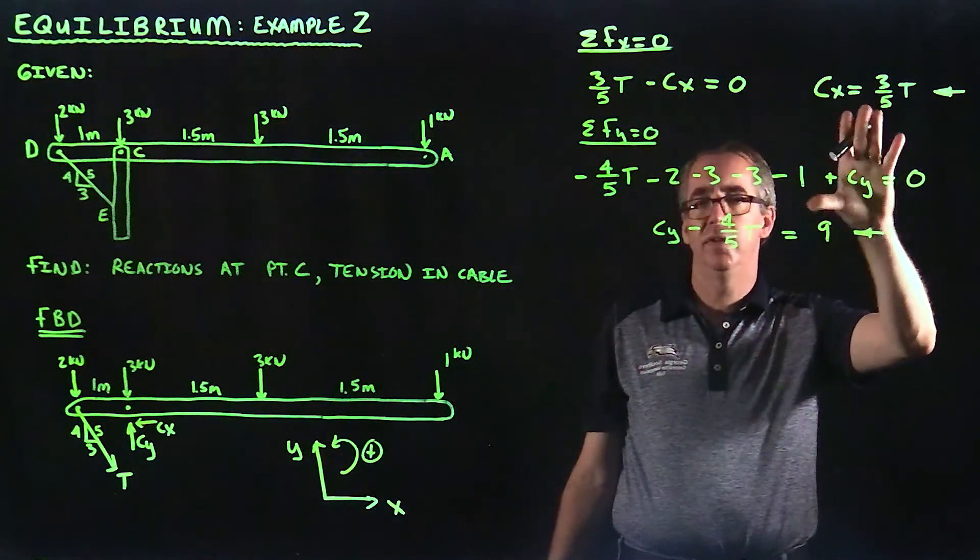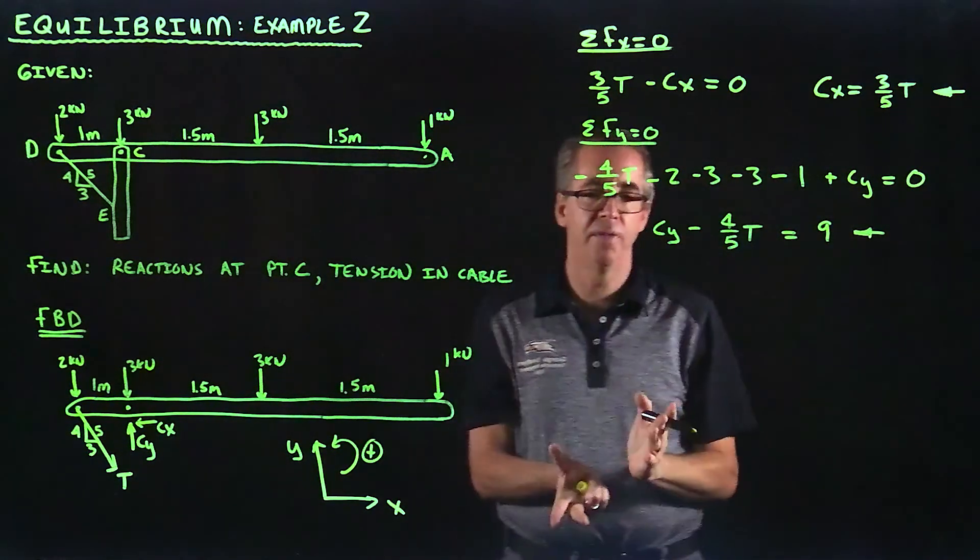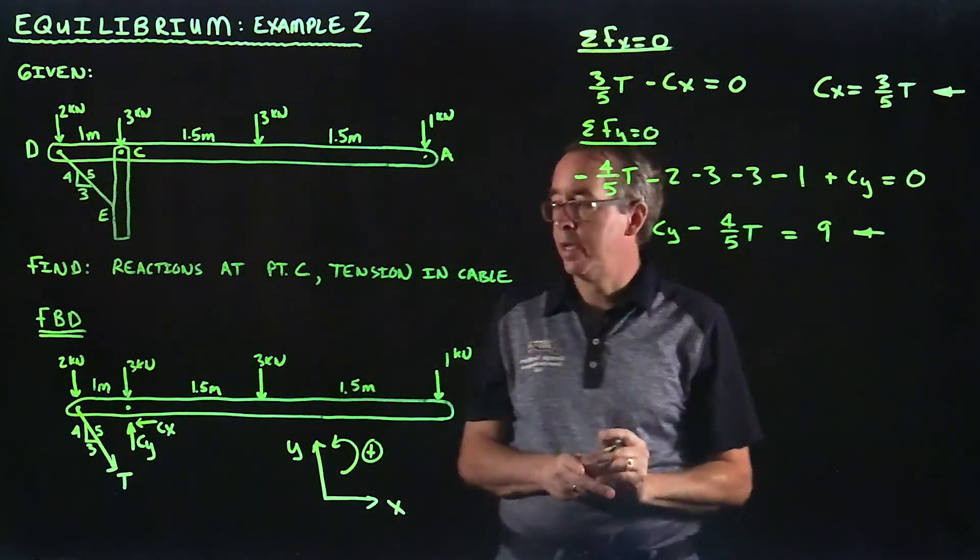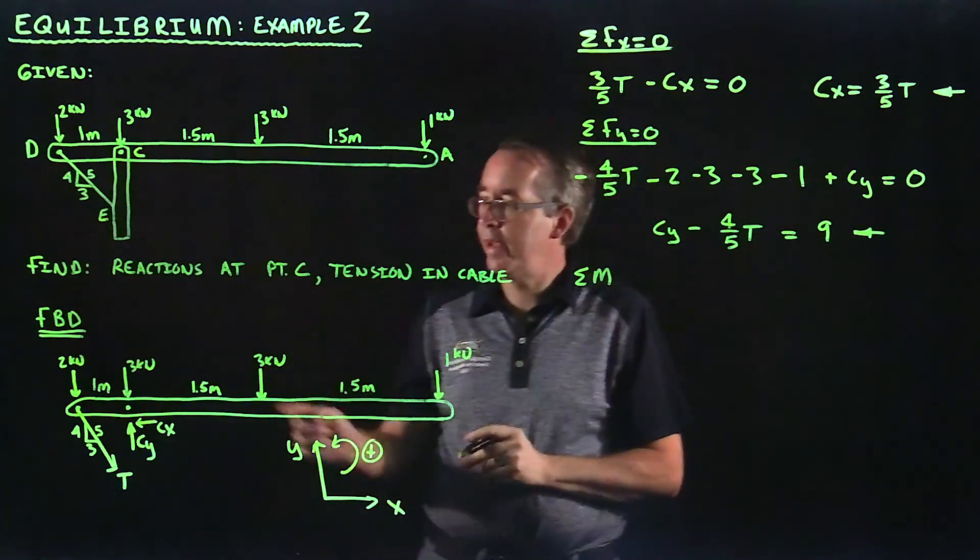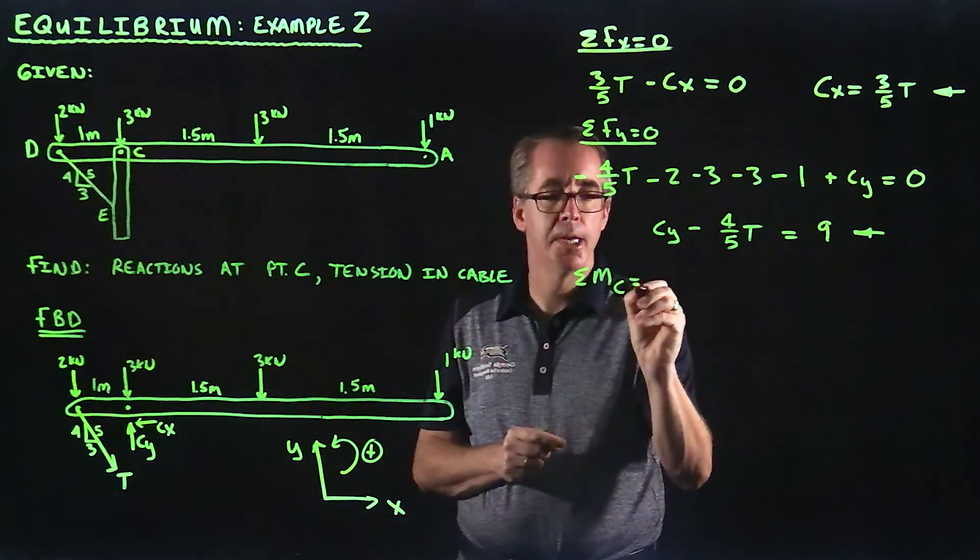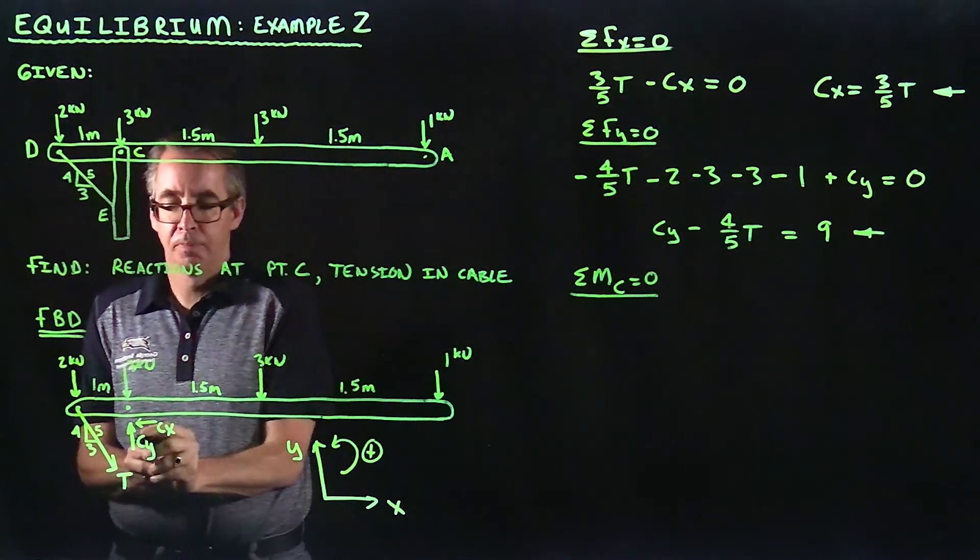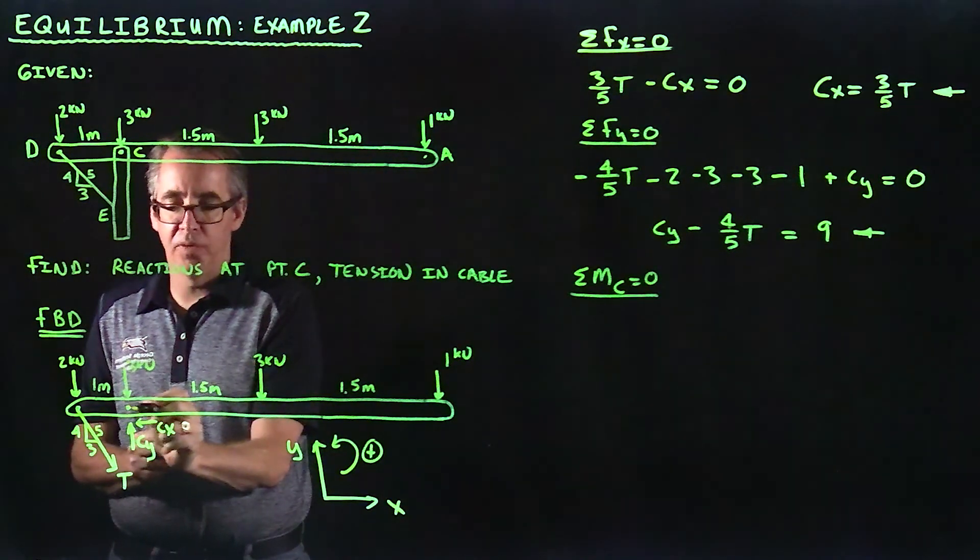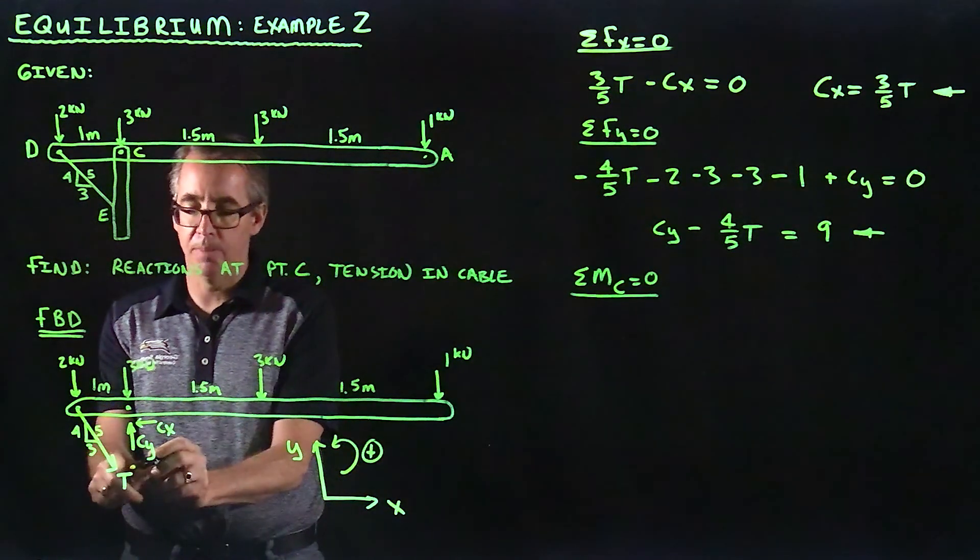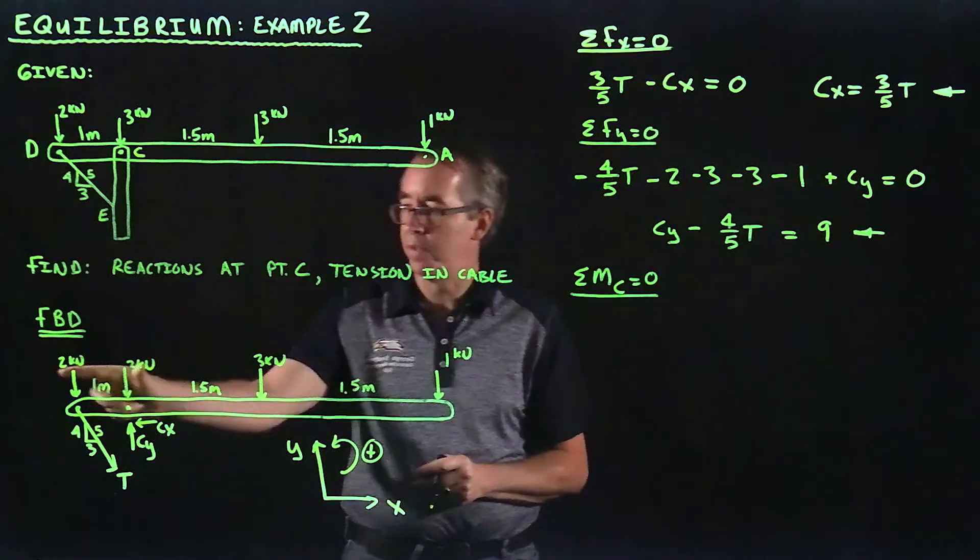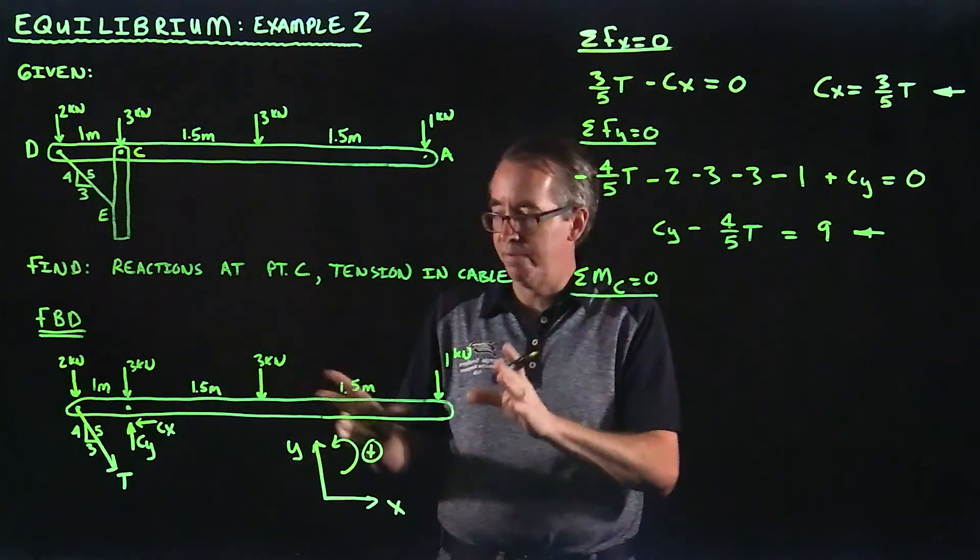So far, I've got 2 equations and 3 unknowns, CX, CY, and T. I'm not really getting very far quickly. Fortunately, I can take moments about a point. If I take moments about C, what that does is that eliminates 2 unknowns, because both CX and CY go through that point. If I take moments about C, that will help me isolate this tension in the cable with all these known forces.